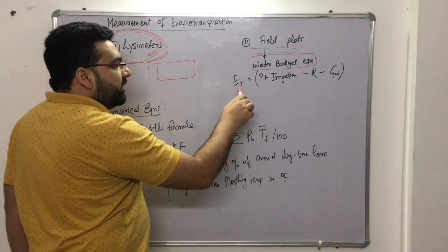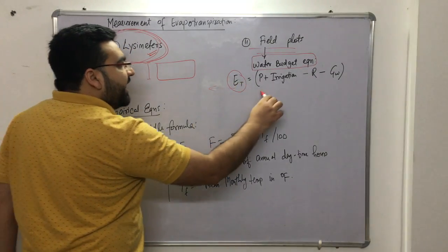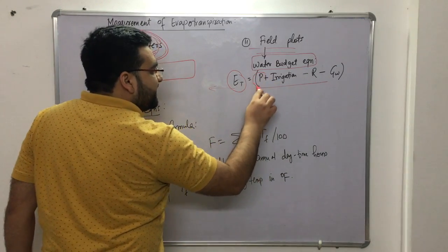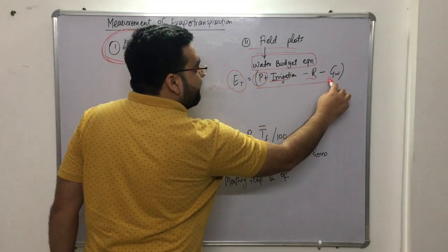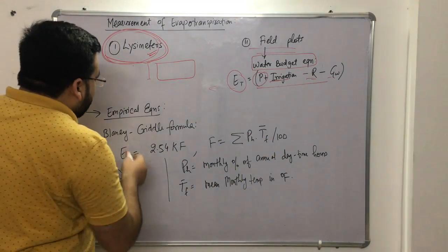In the water budget equation, if you take evapotranspiration on the left-hand side, on the right-hand side you will have precipitation plus irrigation minus runoff minus groundwater storage.